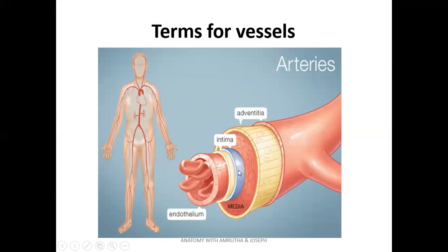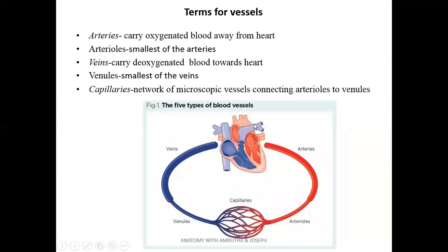There are some terms commonly used for vessels. A vessel has three layers from inner to outer: tunica intima, tunica media, and tunica adventitia. From the heart, arteries arise and carry oxygenated blood to the tissues. As arteries move, they divide and branch like a tree, becoming smaller and smaller to form arterioles. Arterioles again divide and form capillaries.